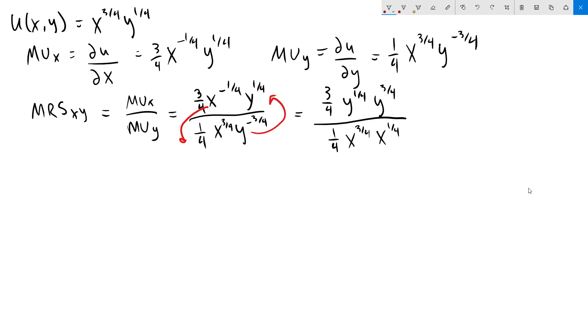This is also a good time to simplify our coefficient. We notice that there is a one-fourth here on the top and a one-fourth on the bottom. Those are going to cancel. Next, when we multiply y to the one-fourth times y to the three-fourths, we add up the exponents. Those add up to one. We can say the same thing about the x's on the bottom. This leaves us with three y over x. And that is our marginal rate of substitution of x for y.